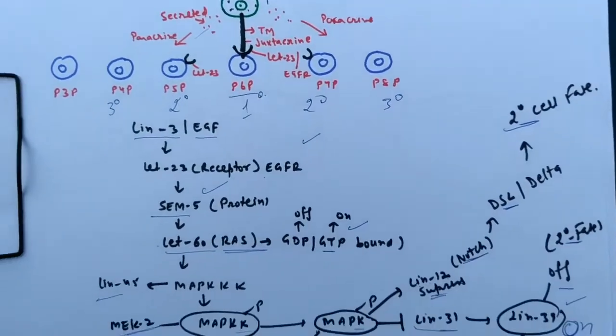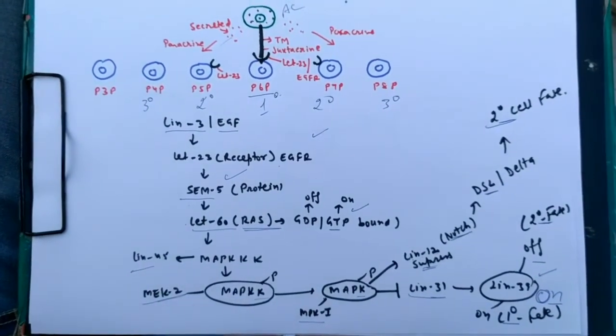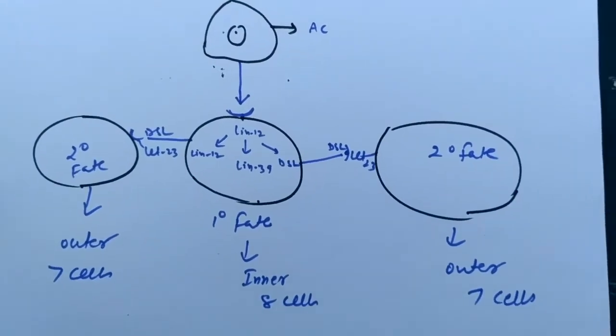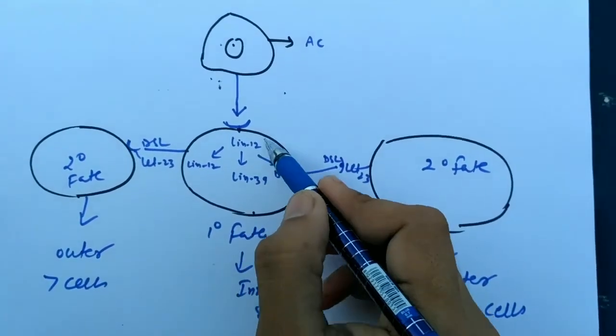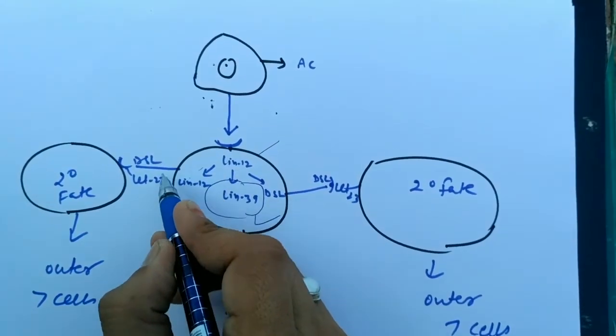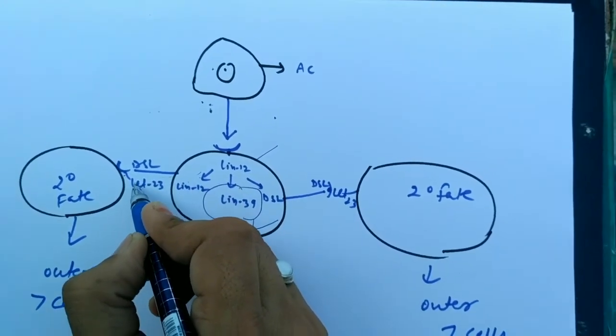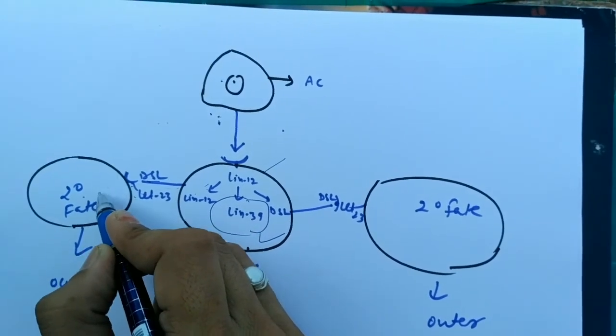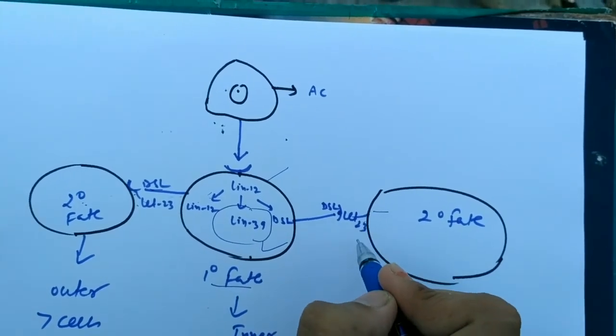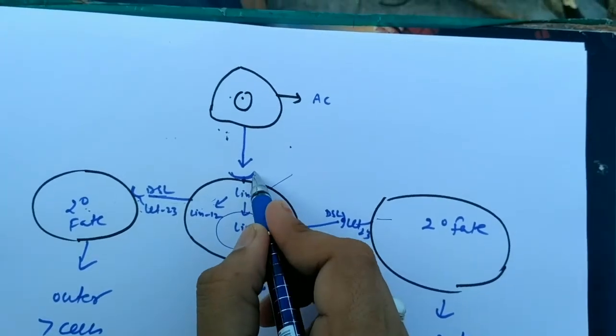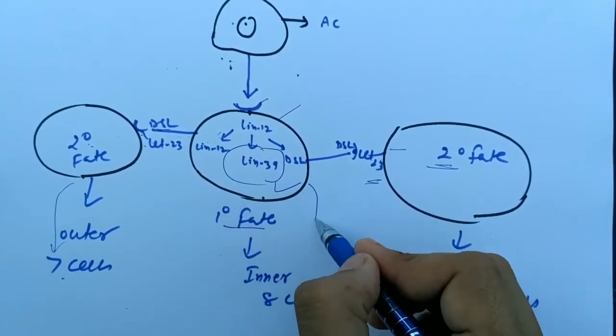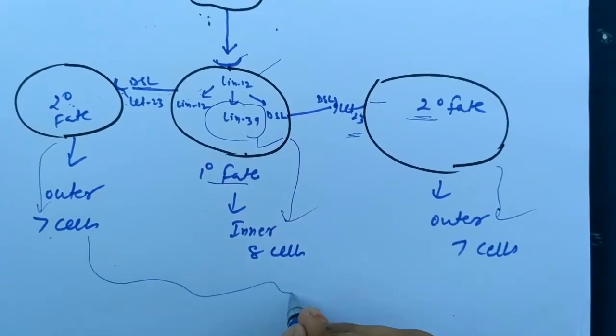I hope it is clear to you, the whole process at the protein level for vulva formation. In the last, you can see the anchor cell showing its effect. LIN-12 forms LIN-39 for primary fate, and LIN-12 action activates the DSL cell binding with secondary fate-determining cells. The DSL protein has greater affinity to bind with the LET receptor in secondary cells but never binds with the primary cell. These form secondary cells. So it will form 7 cells, then 8 cells, then 7 cells, and total will be 22 cells.